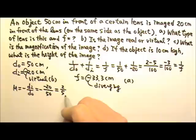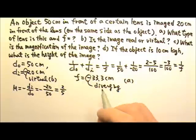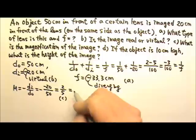And this magnification is smaller than 1, which means the image is smaller than the object. And then we want the height of the image. So for part D, this is the answer for part C.